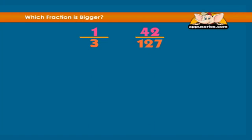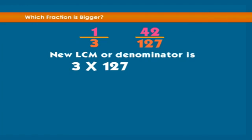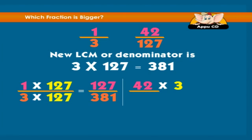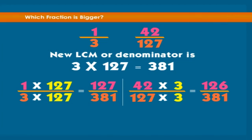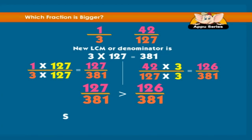Now which is greater: one third or forty-two over one hundred twenty-seven? The new LCM, or common denominator, is three times one hundred twenty-seven, which equals three hundred eighty-one. One third becomes one hundred twenty-seven over three hundred eighty-one. Forty-two over one hundred twenty-seven becomes one hundred twenty-six over three hundred eighty-one. Since one hundred twenty-seven over three hundred eighty-one is greater than one hundred twenty-six over three hundred eighty-one, one third is greater than forty-two over one hundred twenty-seven.